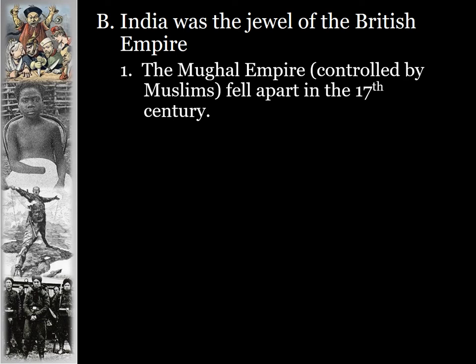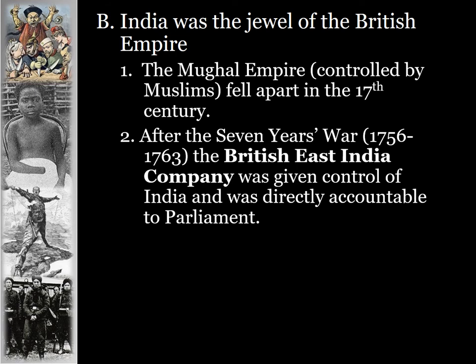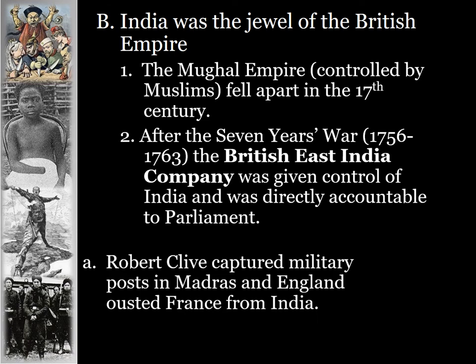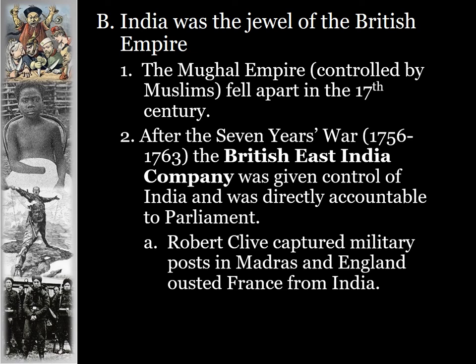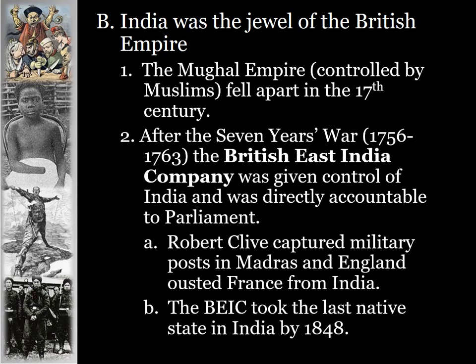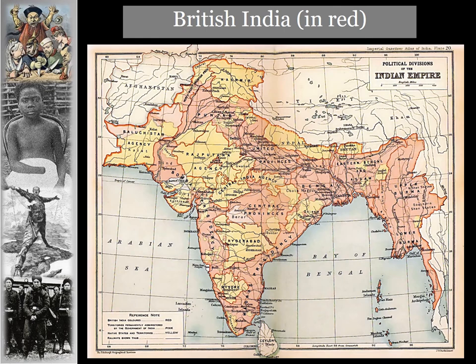India would be seen as the jewel of the British Empire. The Mughal Empire controlled by Muslims fell apart in the 17th century. After the Seven Years' War, the British East India Company was given control of India and was directly accountable to Parliament for the management of India. Robert Clive captured military posts in Madras and England ousted France from India during the British victory in the Seven Years' War. The British East India Company took the last native state in India by 1848.